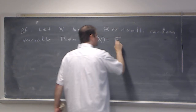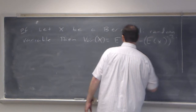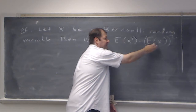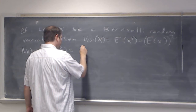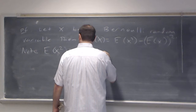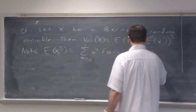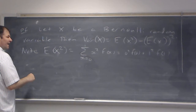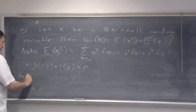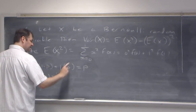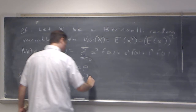The variance of x by our formula equals E[x²] minus (E[x])². I need to calculate E[x²]. That's the sum as x goes from 0 to 1 of x²·f(x) = 0²·f(0) + 1²·f(1) = 0 + f(1) = p. So variance of x — where x is Bernoulli — is E[x²] minus (E[x])² = p minus p², and factoring out p gives p·(1−p). That's what we wanted to show.